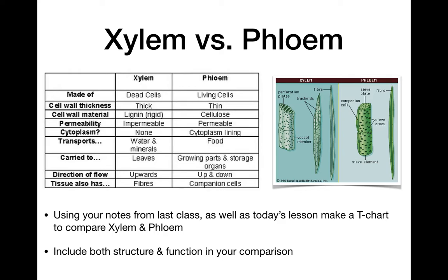Xylem transports water and minerals; phloem transports food as well as hormones and RNA. Xylem transports things mostly to the leaves — water and minerals — while phloem can move things from the leaves to any growing part: new leaves, roots, branches, the trunk, or storage organs to put away sugar for later. Direction of flow is upward only in xylem, whereas phloem moves up, down, and sideways. Xylem also has fibers for strength; phloem has companion cells for metabolic support.